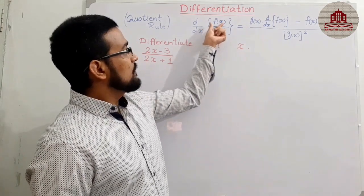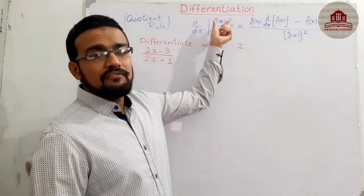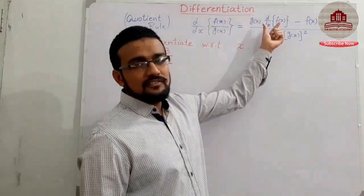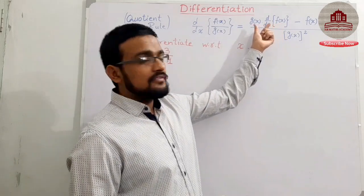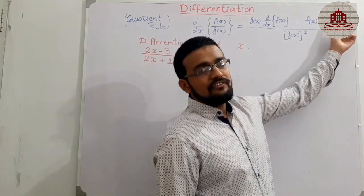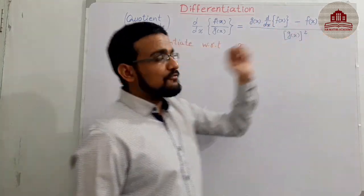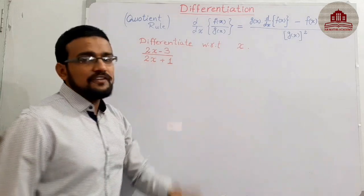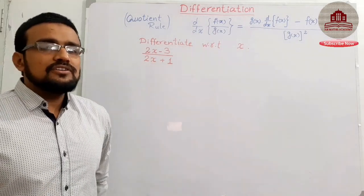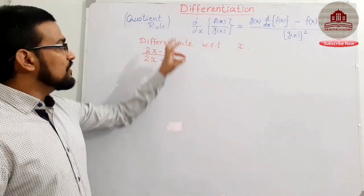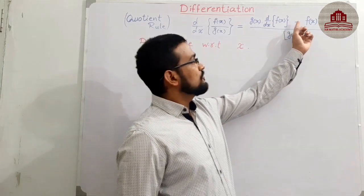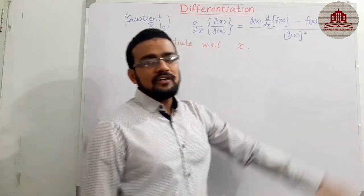You see, the derivative of the numerator comes first, and the denominator derivative term comes after the negative sign. The arrangement is most important in the quotient rule because of the negative sign.